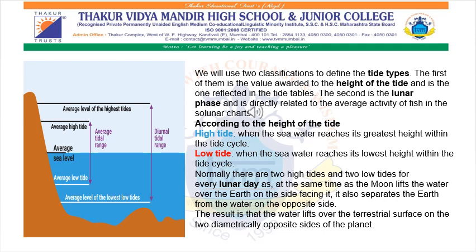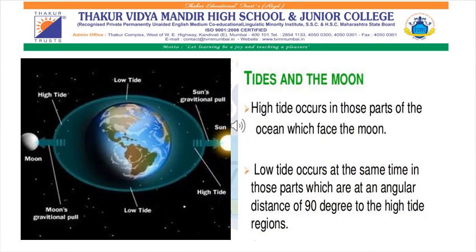We will use two classifications to define the tide types: the height of the tide and the lunar phase. Today we are going to cover the first one — the height of the tide. According to the height of the tide, we can classify tide types into two: high tide and low tide. High tide is when the sea water reaches its greatest height within the tide cycle, and low tide is when the sea water reaches its lowest height within the tide cycle. Normally, there are two high tides and two low tides for every lunar day.